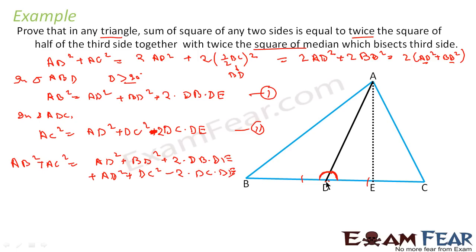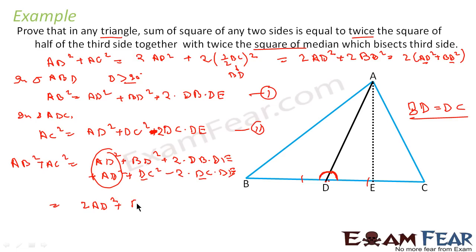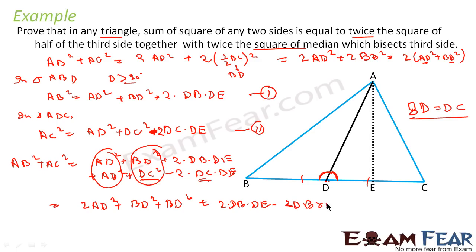Now we add the two equations. AB² + AC² = AD² + BD² + 2·DB·DA + AD² + DC² − 2·DC·DA. Since BD = DC (AD is the median), we substitute DC with BD everywhere. The +2·DB·DA and −2·DB·DA cancel, and BD² + BD² = 2·BD². So AB² + AC² = 2·AD² + 2·BD². This is exactly what we had to prove.